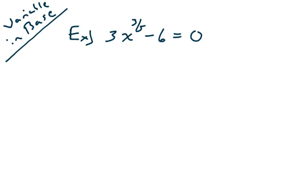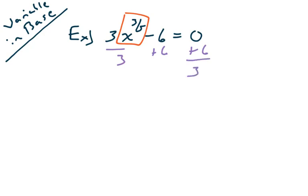For our first equation, x is spotted in the base. When x is in the base, you want to isolate that exponent expression first. Basic algebra applies — you're going to add six and divide by three — but keep in mind we're isolating that exponent expression first. So x to the three-fifths equals two.